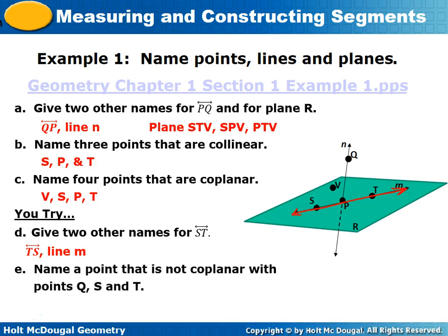Name a point that's not coplanar with points Q, S, and T. If you notice, Q is on one line and S and T are on another line. Those two lines could form a vertical sheet of paper — a different plane. The only point not on those two lines is point V. So point V is not coplanar with Q, S, and T.